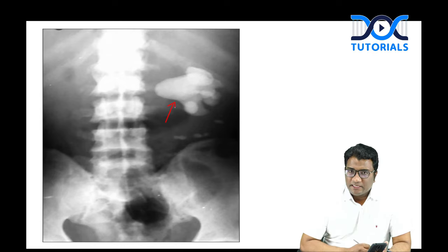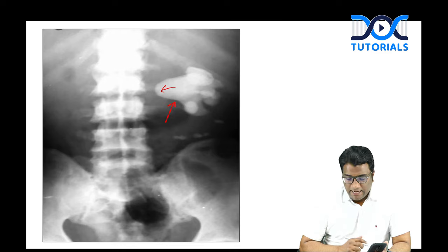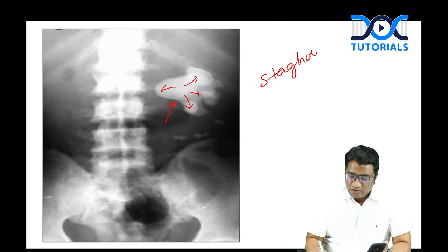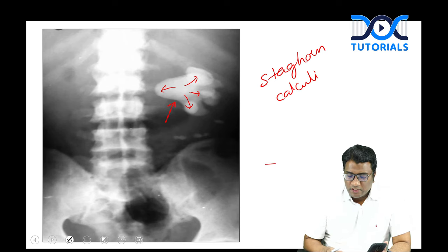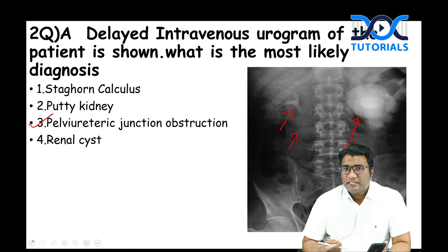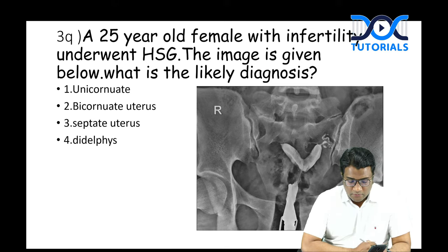Staghorn calculi appear on plain radiograph as a calcified density taking the shape of the renal pelvis, with opacification of at least two calyceal systems. The exam image was of PUJ obstruction — contrast opacified the left kidney without much contrast entering the left ureter, indicating delayed emptying suggestive of PUJ obstruction.